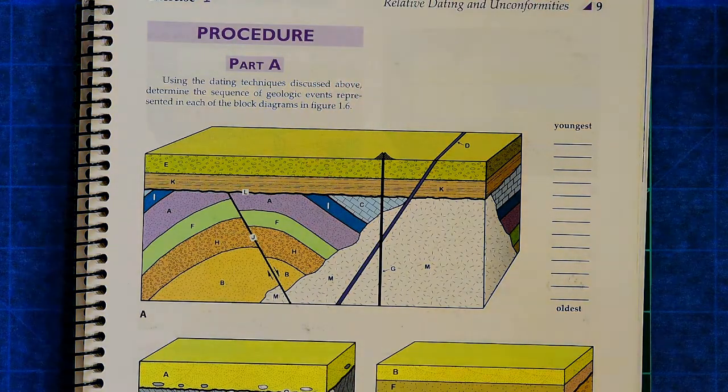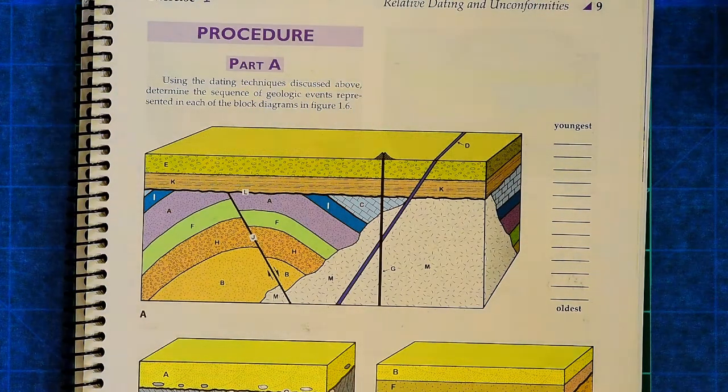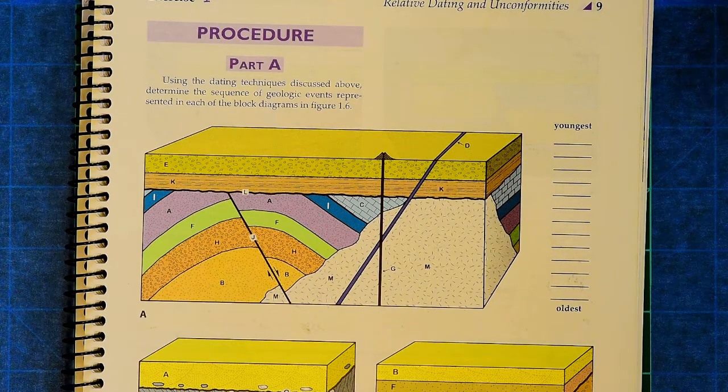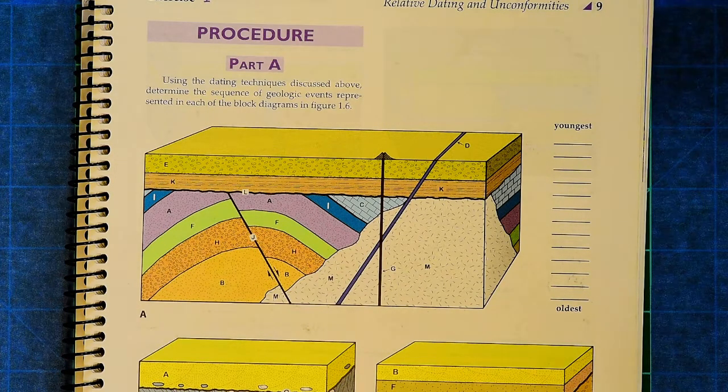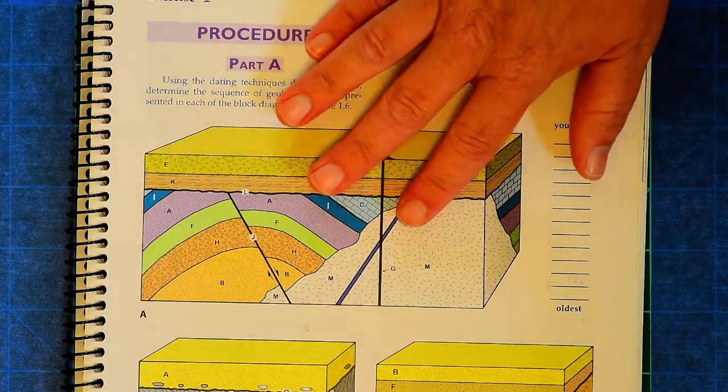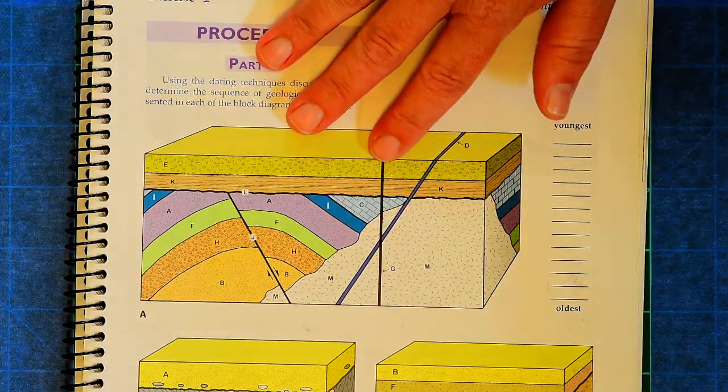you're given these block diagrams with all sorts of different rocks and rock types. And use your principles of relative dating, meaning superposition, cross-cutting relationships, inclusion, to figure out which rock is the oldest, which rock is the youngest.